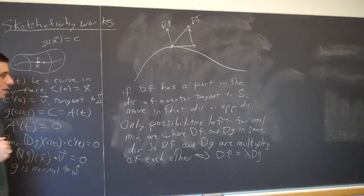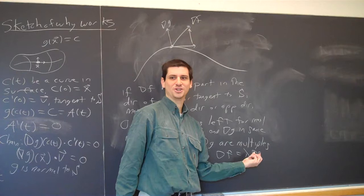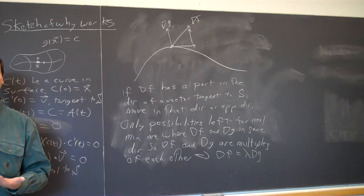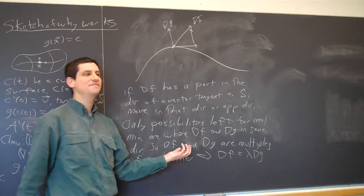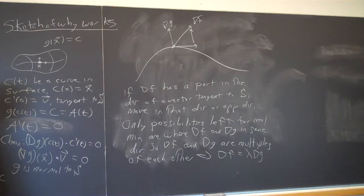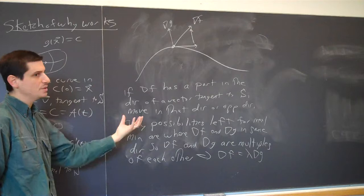Lambda comes from linear algebra — it comes from eigenvalues and eigenvectors. So this at least gives you an idea of why Lagrange multipliers works. How much calculus is being done here? Very little — we just take the derivative. How much algebra? An enormous amount. The difficulty is actually solving the algebra, and in most situations you can't solve it exactly.